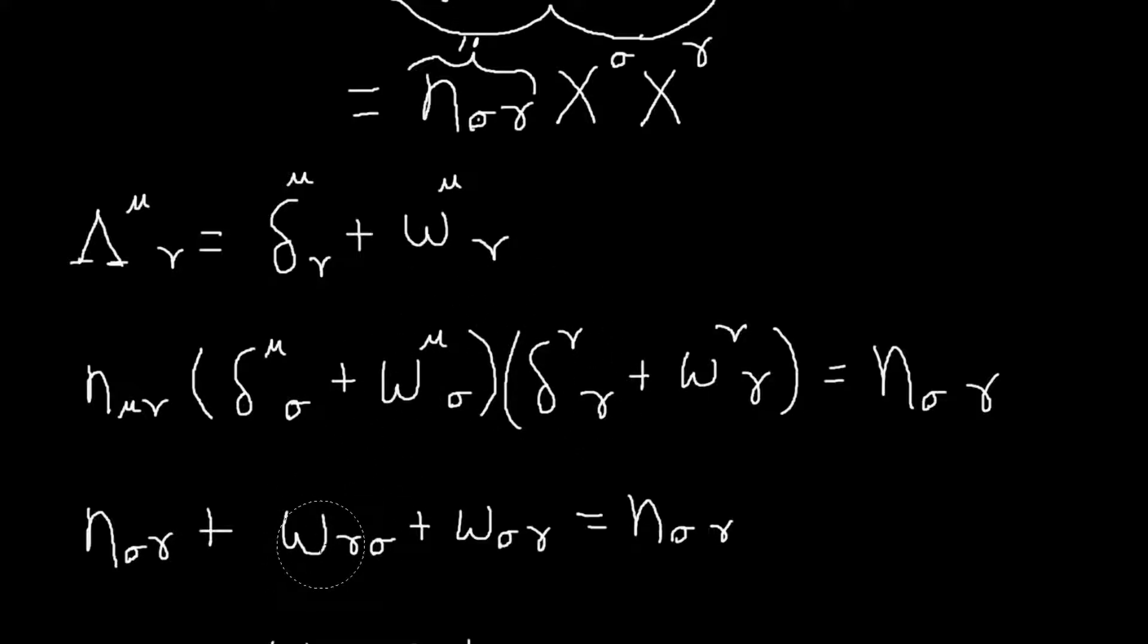One term will be this times this times this. And so that will just make... so this will lower the mu and become a nu. And then when I multiply by this, that mu will become a gamma. So this will become... I don't know if this is a w or an omega, whatever it is. Let's just say w. It'll become w gamma sigma. And then the other term, if you do it, will be w sigma gamma. So I'll have this expression, and then obviously these things cancel.